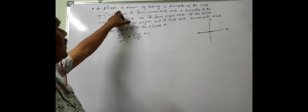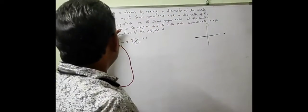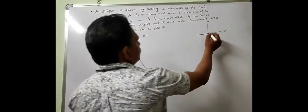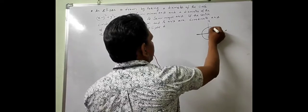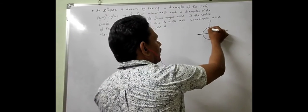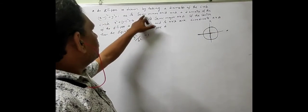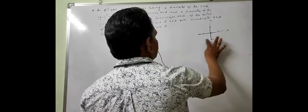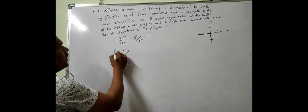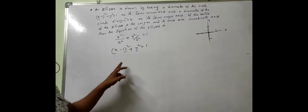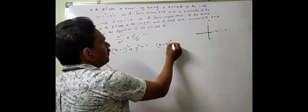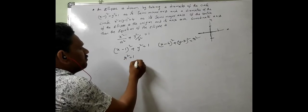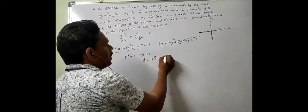To find a and b, the condition given is: an ellipse is drawn by taking a diameter of the circle x minus 1 whole square plus y square is equal to 1 as its semi-minor axis. The circle is in the form x minus h whole square plus y minus k whole square is equal to r square, where h comma k is the center and r is the radius. Here r square equals 1, so r is equal to 1. Therefore diameter equals 2r, that is 2.